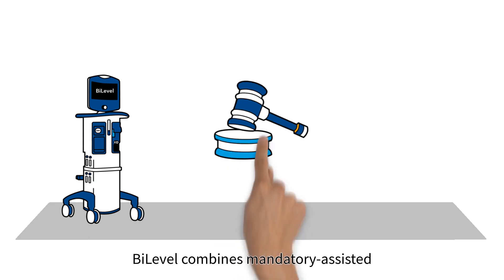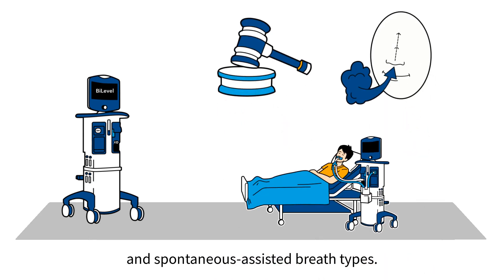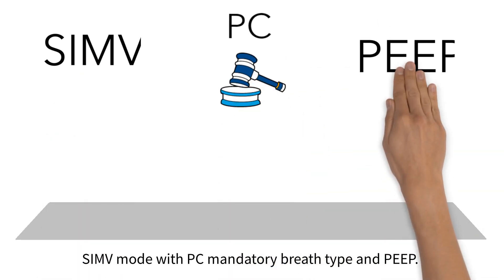Bi-level combines mandatory assisted and spontaneous assisted breath types. Breaths are delivered in a manner similar to SIMV mode with PC mandatory breath type and PEEP.